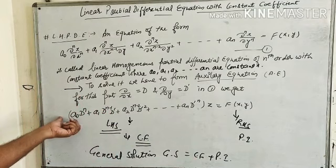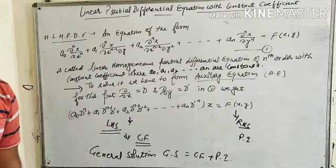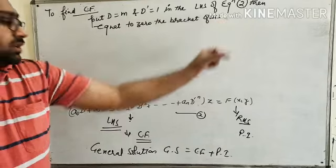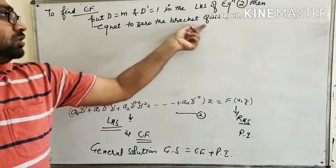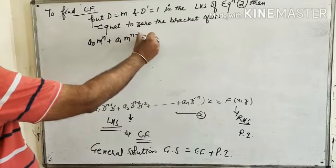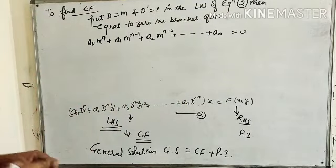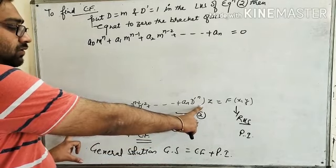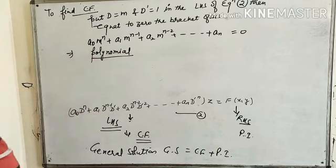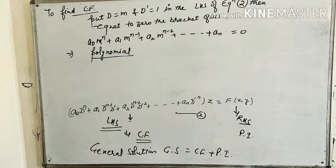To find CF, we consider the homogeneous equation: a₀Dⁿ + a₁Dⁿ⁻¹D' + ... + aₙD'ⁿ applied to z equals 0. We put D = m and D' = 1 in the LHS and equate the bracket to zero. This gives us: a₀mⁿ + a₁mⁿ⁻¹ + a₂mⁿ⁻² + ... + aₙ = 0. This is a polynomial, and if roots exist, we calculate CF under different conditions.